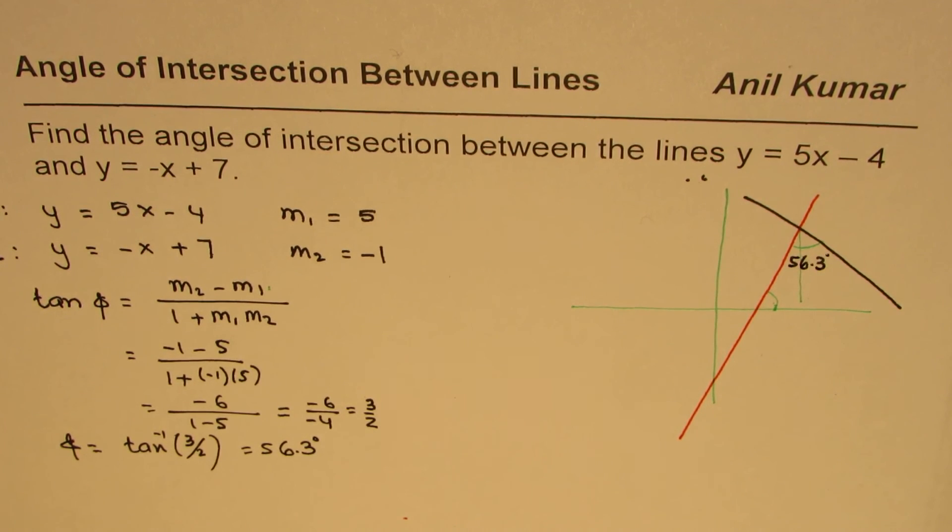So that is how you can find slope, from the slope, the angle between the intersecting lines. I hope that helps. Thank you and all the best.